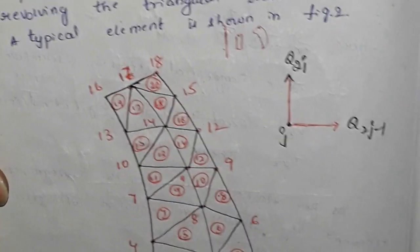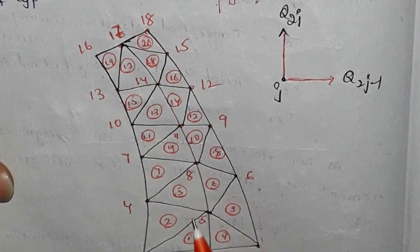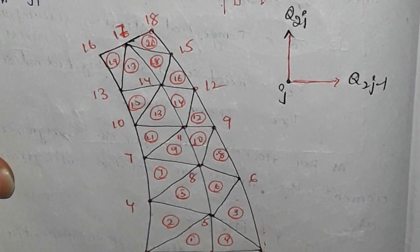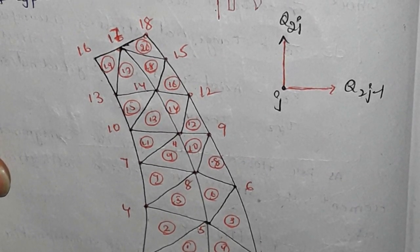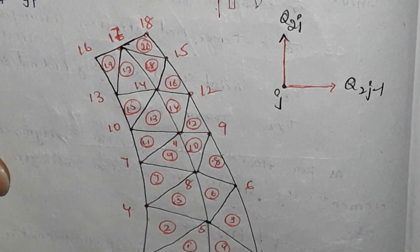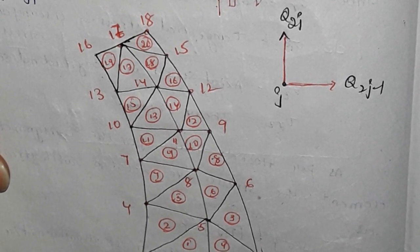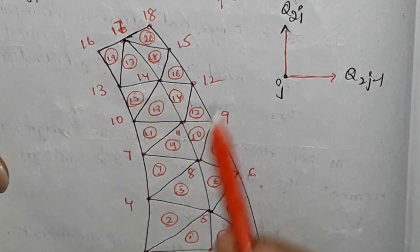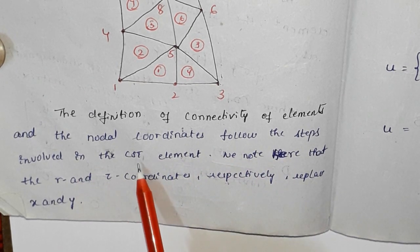We have a revolving object divided into smaller triangular elements. For the strain displacement matrix in axisymmetric problems, we have a plane strain condition. The nodal coordinates follow the same steps involved in the CST element. The element connectivity and nodal coordinates are defined in the same manner as CST.